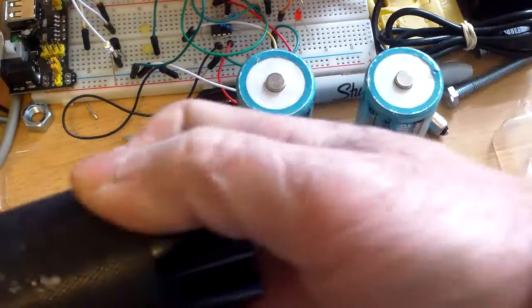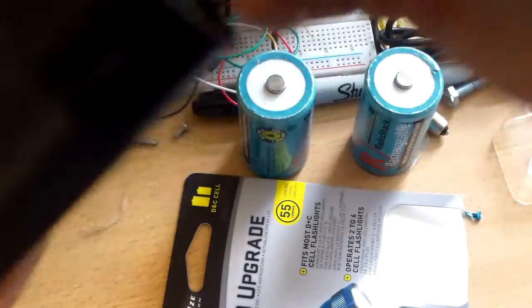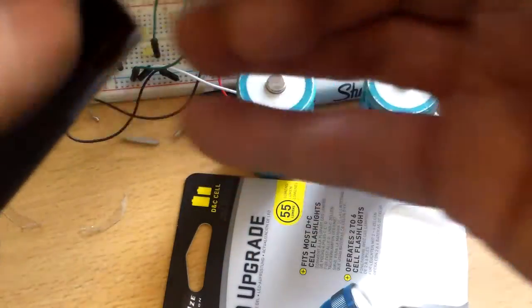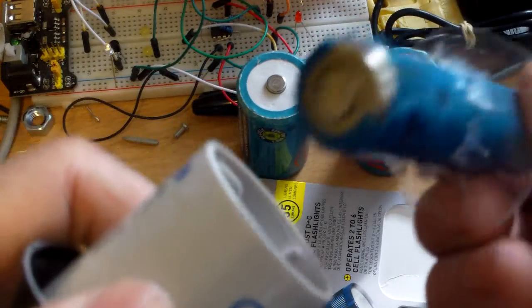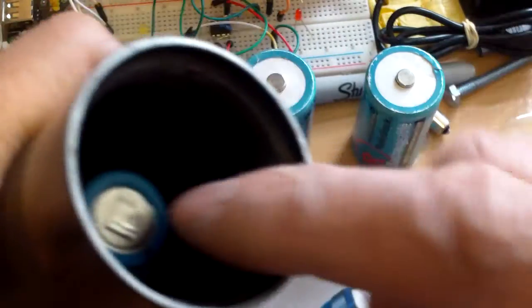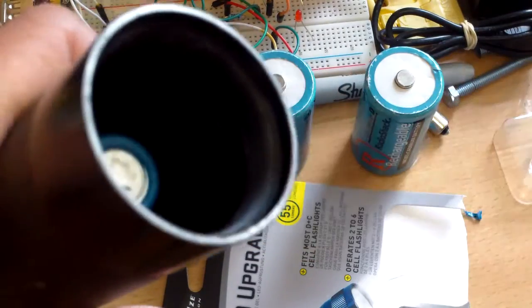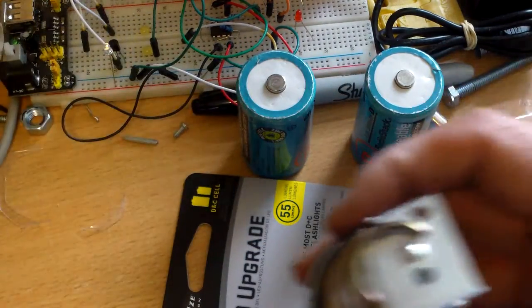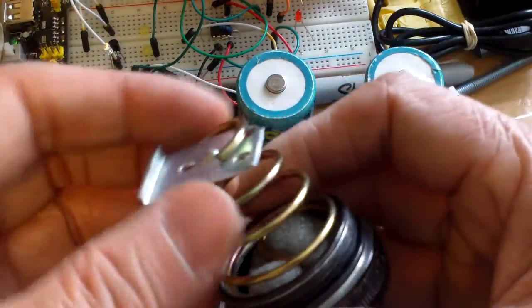After you do that, you can insert your battery into the flashlight, and your battery would be held somewhat in the center to make good contact.